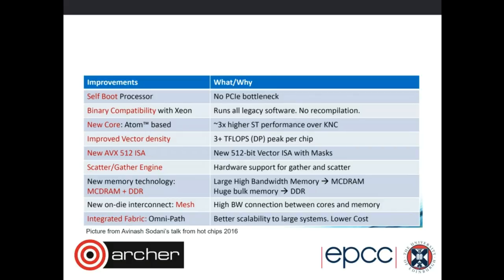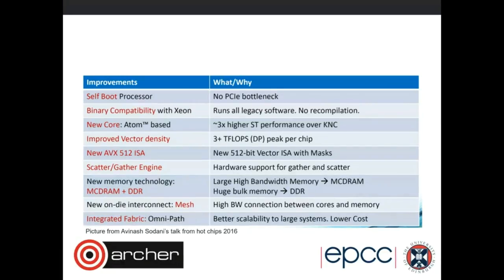The KNL still has very large 512-bit vector units, which is not that uncommon now - the upcoming Skylake will also have vector units this large. They have also added new vectorization instructions for the KNL to deal with things like memory gathers and scatters, which the KNC was not very good at. So there is hope that code which didn't vectorize well on the KNC should give better performance on the KNL because of these new vector instructions.